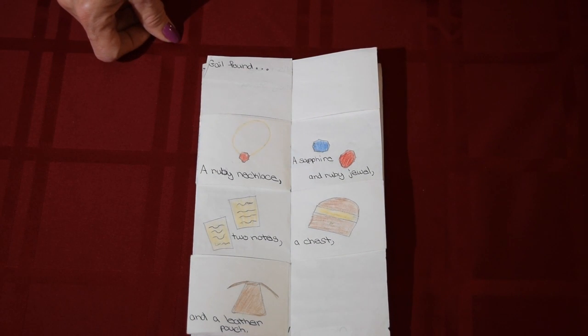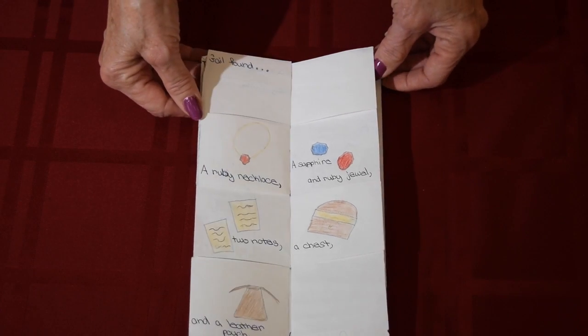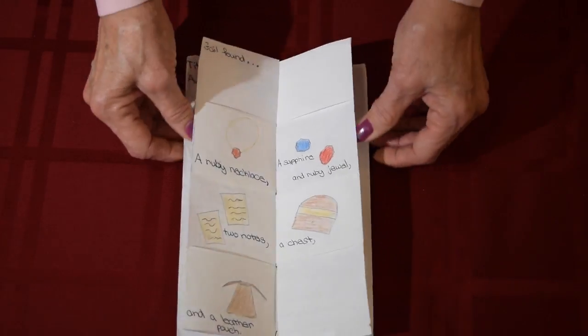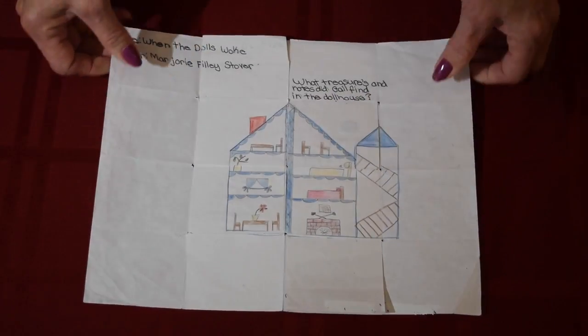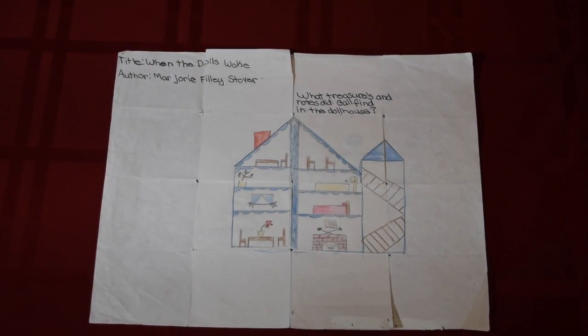Including a ruby necklace, a sapphire and ruby jewels, some notes, a chest, and a leather pouch. And then again closing it up to bring it back to the front. Thank you.